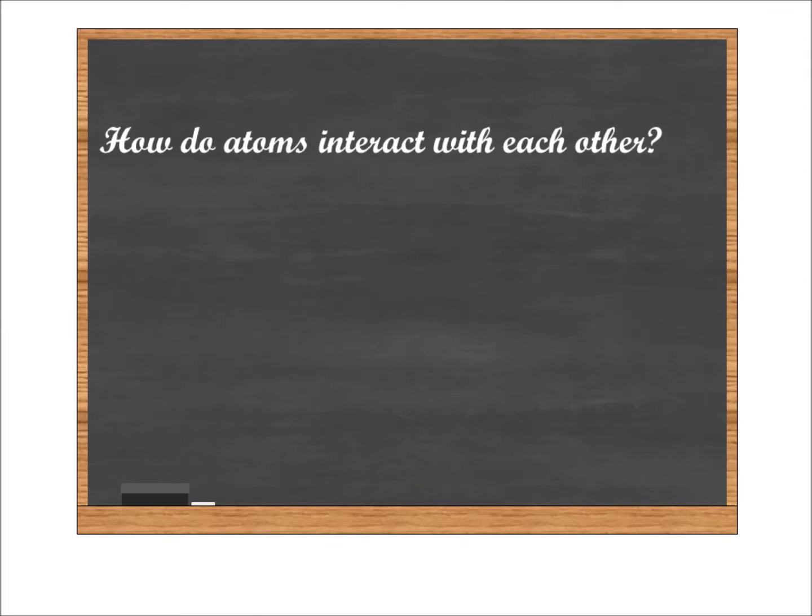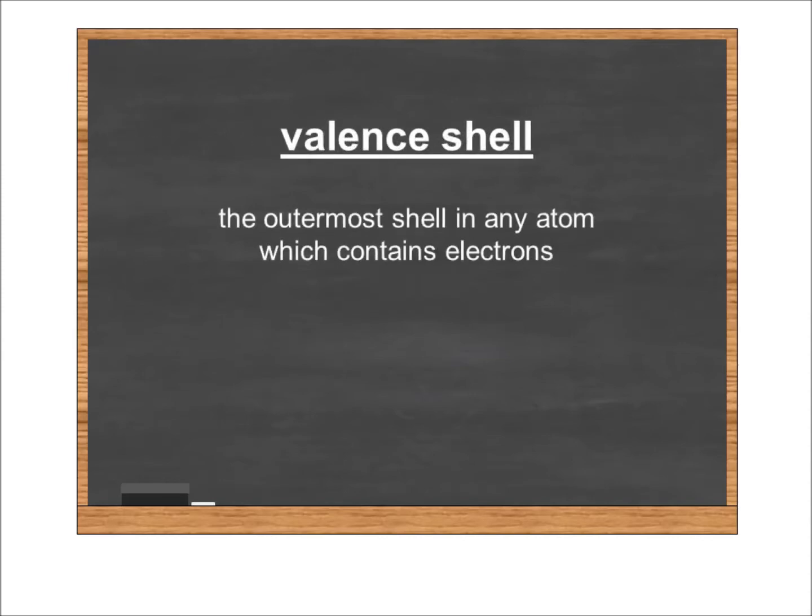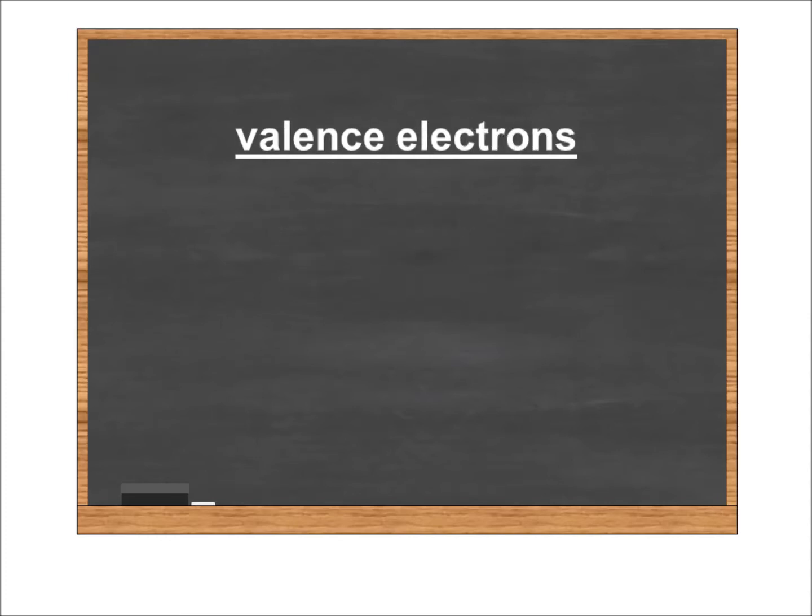In this sense, we're very interested in the valence shell of atoms because, as I noted in the last lecture, this outermost shell occupied by electrons is the portion of an atom that will interact with another atom, and the electrons within the valence shell are what we call valence electrons.